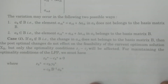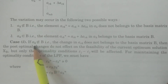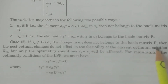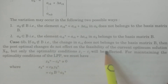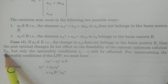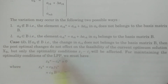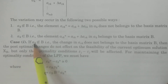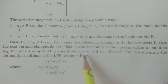Case 1: if ak does not belong to the basis matrix B, then the changes in ark do not affect the feasibility of the current optimum solution. Feasibility means xB remains a feasible solution. This is because xB does not depend on the ak values. Only the optimality condition zj minus cj will be affected.